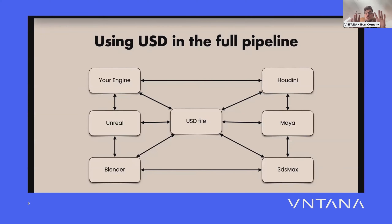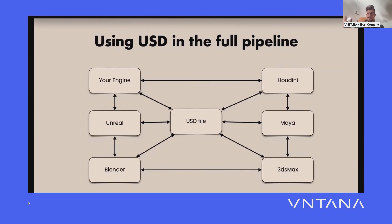Each program in the pipeline can represent a different artist — they can all be working on the same scene simultaneously. When I say scene, I really mean scene: one USD 'file' is actually comprised of dozens if not hundreds of sub-files like USDA files, editable in any supporting program. This is why USD was developed — it was Pixar that originally created it for animations. Pixar movies are super complex, and USD allowed multiple artists to work on scenes simultaneously without stepping on each other's toes.